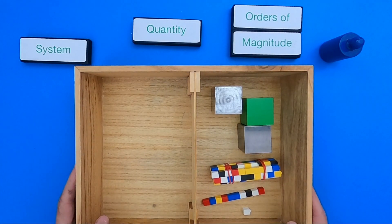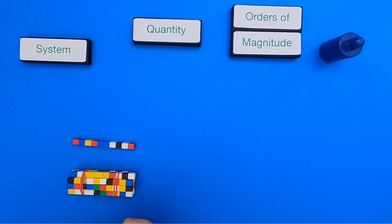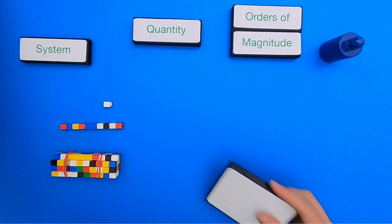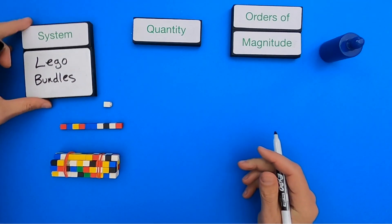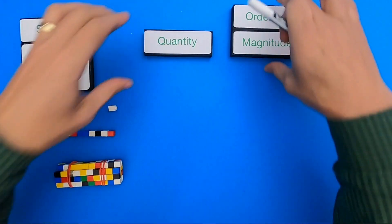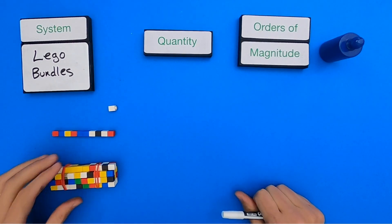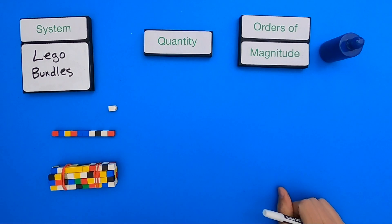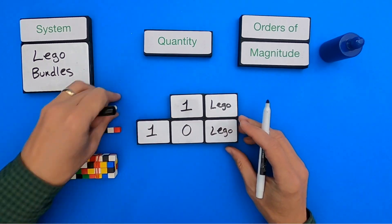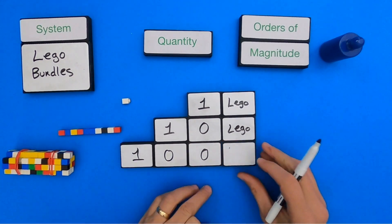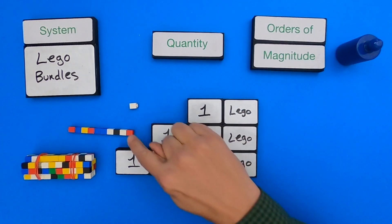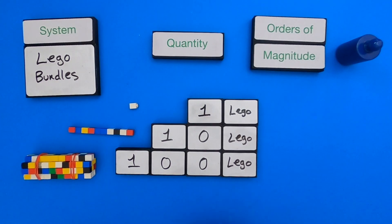So the first thing I want to do is identify what is the system we're going to investigate — in this case, these three bundles of Lego. The next thing we do is write down the quantity. We have one Lego, this white Lego; we've got 10 Lego, which is this column; and then we've got these 10 stacks of those 10, so we have 100 Lego right there.